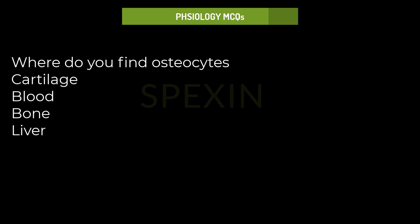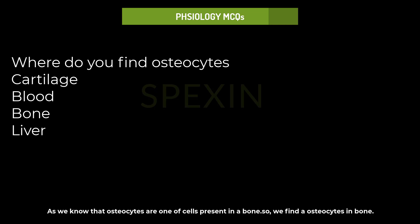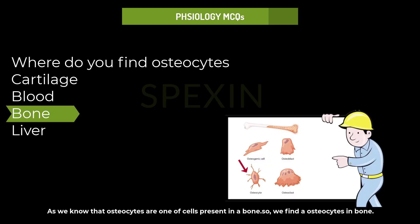Where do you find osteocytes? The options are cartilage, blood, bone, or liver. As we know, osteocytes are one of the cells present in the bone, so we find osteocytes in bone.